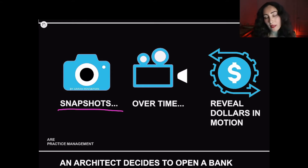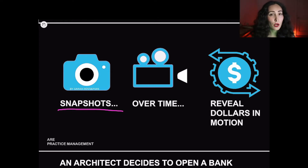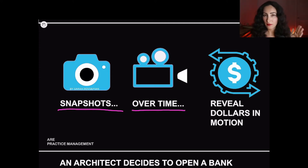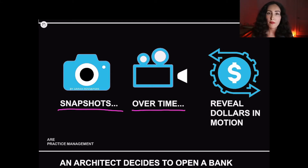I use these three icons to help you remember the three types of financial statements. The balance sheet is the camera — that single frame in time telling you about your business's financial health: what are the assets and what are the liabilities? The next statement is your profit and loss statement or income statement, which is a series of snapshots over time, hence the video camera icon. Over time we have revenue coming in, expenses, and then we calculate the profit.